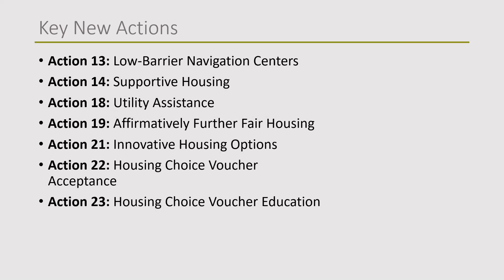Action 13 is meant to lower the barriers for navigation centers — making sure people are allowed to bring their partners unless the project is population-specific like a shelter just for women, allowing pets, and providing space for people's possessions. Pets, partners, and possessions are three significant barriers to finding housing for people experiencing homelessness. A fourth component of this new state law is ensuring privacy, either providing a private room or partitions around beds so people have private space for sleeping.